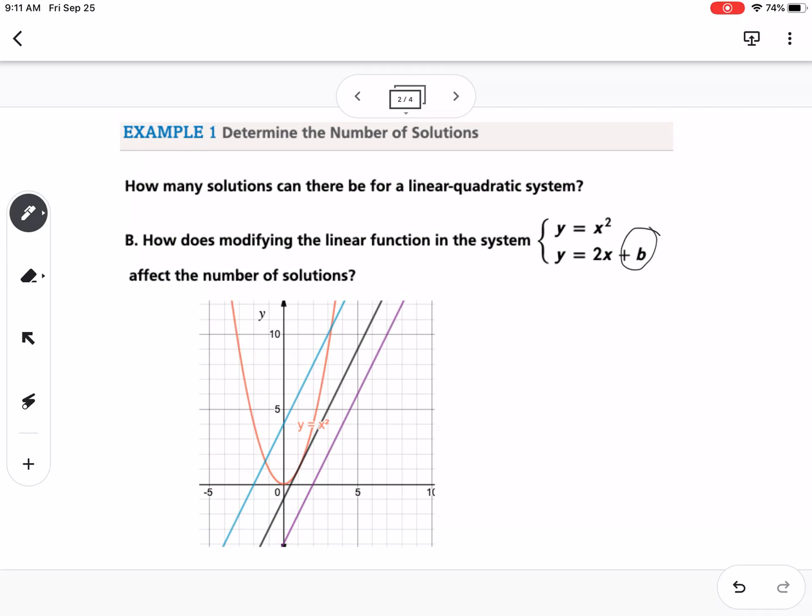So you can see one situation is that we have two solutions. So that would be if we made b four, then it's going to cross the parabola in two different spots so we would have two solutions.